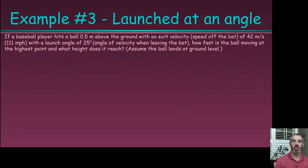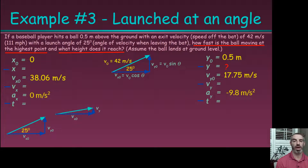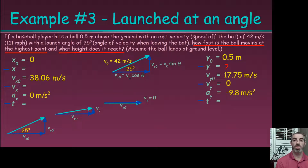Now let's look at the same problem but ask: how fast is the ball moving at the highest point? We start with the same initial conditions. Looking at a velocity diagram, as the ball rises the y-velocity decreases and eventually reaches zero at the highest point. This is the key insight — the final y-velocity at the highest point is zero. So at the peak, the ball only has its x-direction velocity, which is constant at 38.06 meters per second.